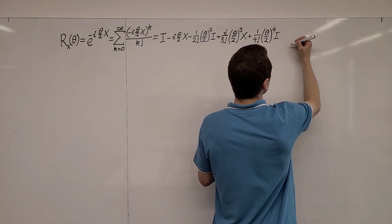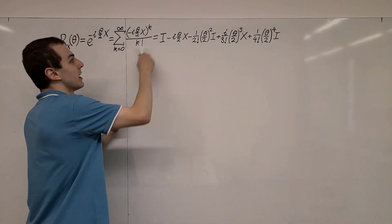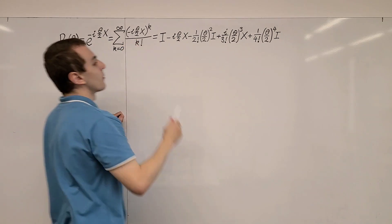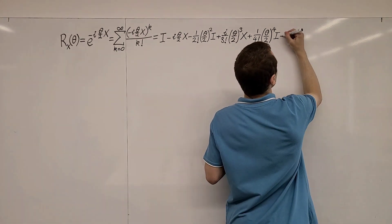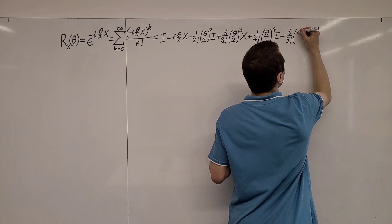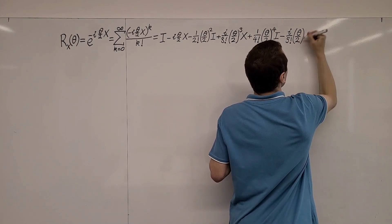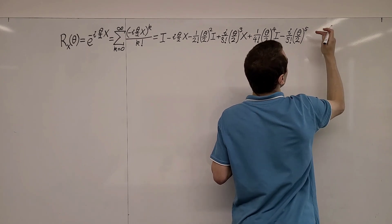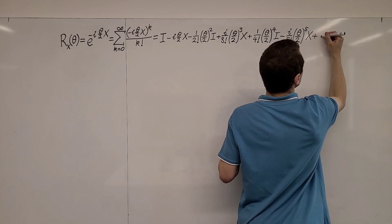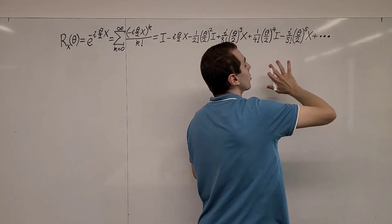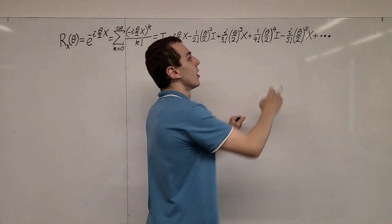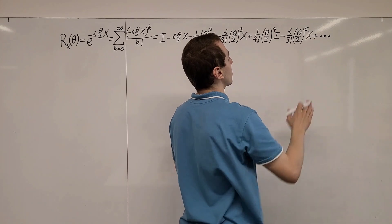And one more term: k equals 5. We raise this to the power of 5, giving minus i on 5 factorial, then (theta on 2) to the power of 5, and because this is an odd power we have Pauli X here. Then there are going to be higher order corrections that you can add as many of as you would like, and you can truncate the series for whatever order approximation you're looking at.